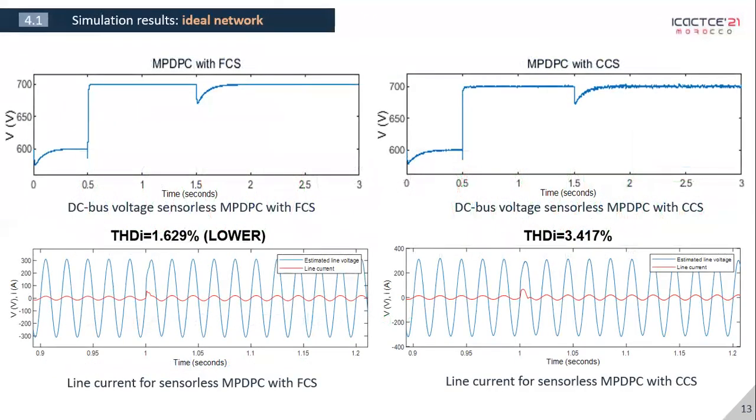Now, for ideal network, we can see that FCS has better performance than CCS. It has a smoother DC voltage and a lower current distortion. But in general, both control strategies have great performance.